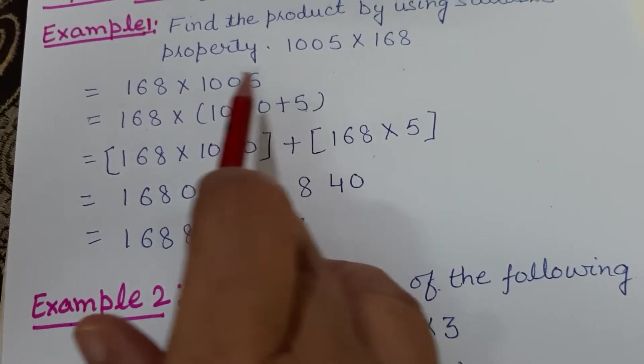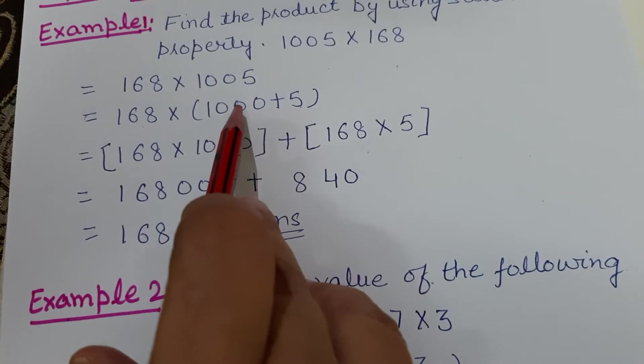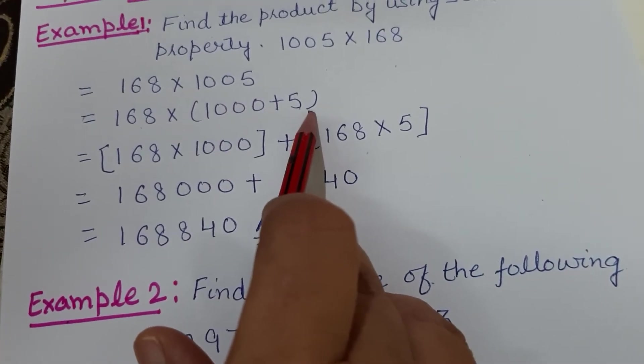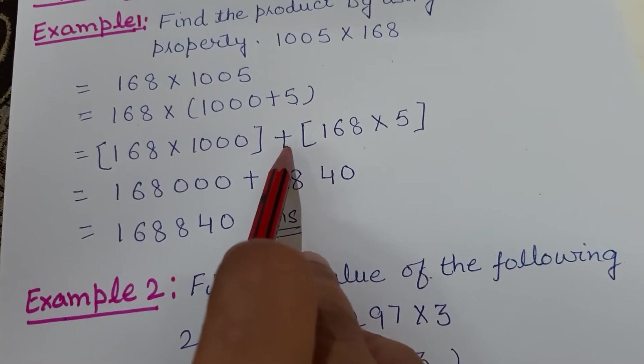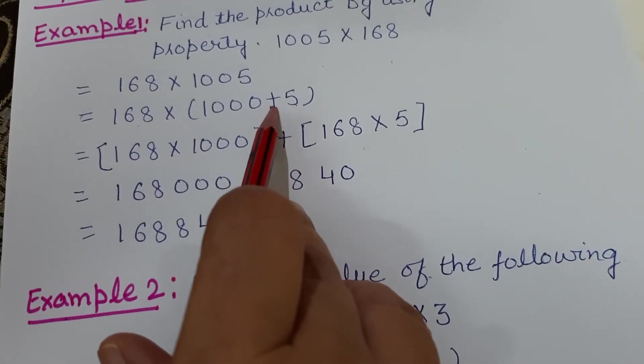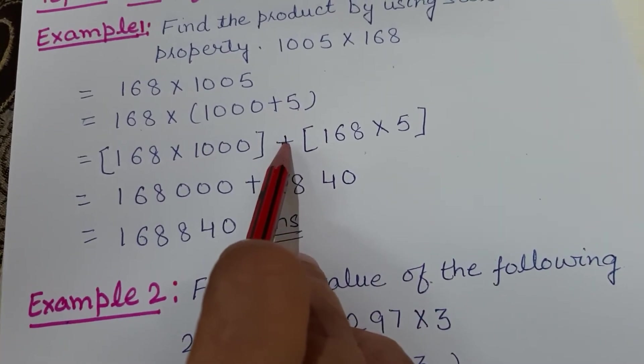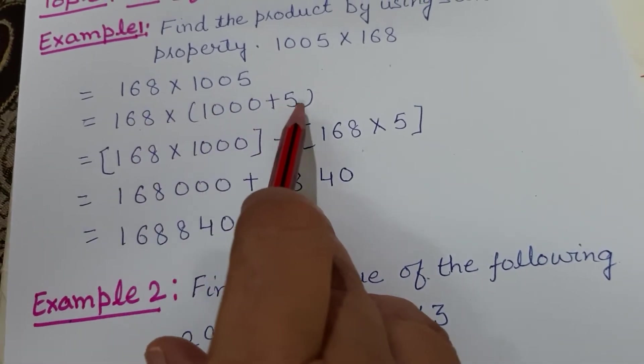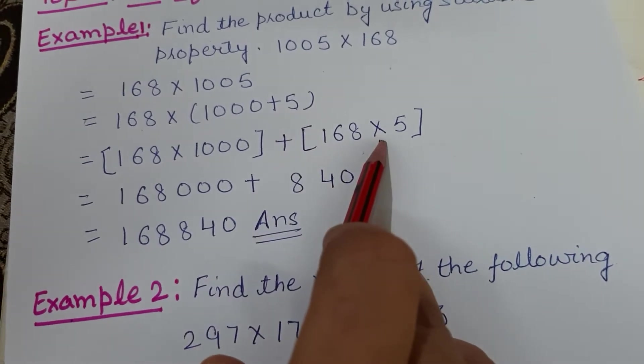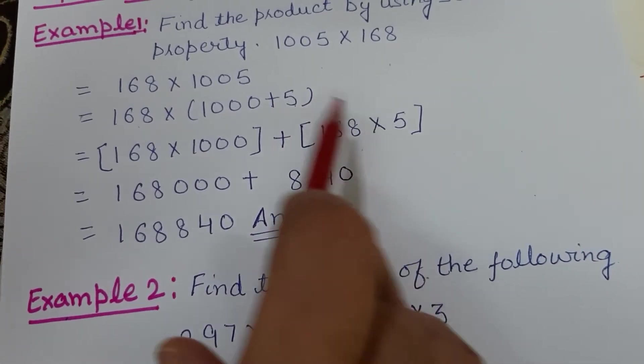The sign which is present inside the bracket, that you will write here. After writing the same sign, 168 will be multiplied with 5. See, first I have multiplied with this number, then with the second number. Now there are two pairs in brackets.